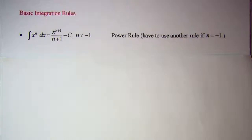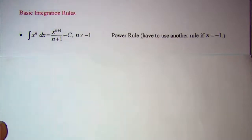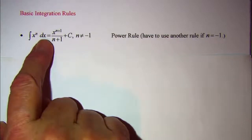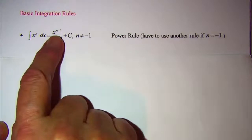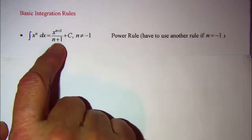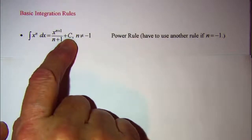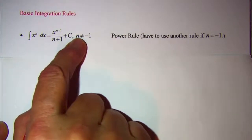In this video we'll be looking at some basic integration rules. Our first rule is when you integrate x to the n power with respect to x: you increase your exponent by 1, then divide by the new exponent, and add your constant. Note that n cannot equal negative 1.